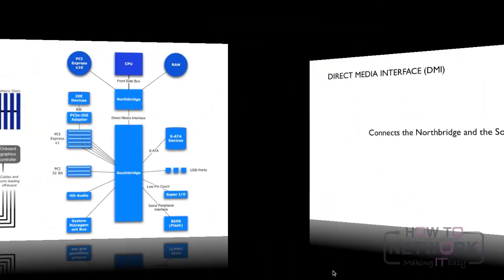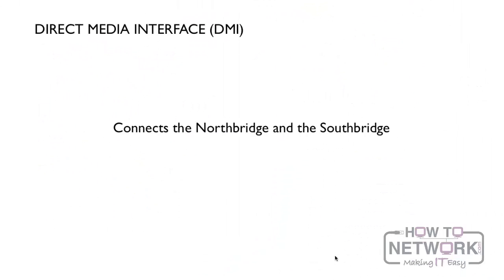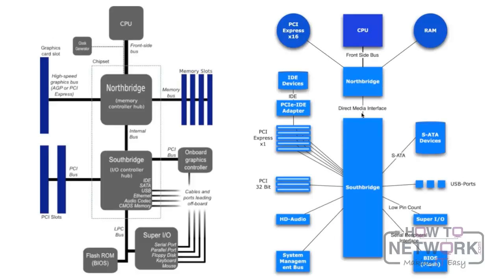The Direct Media Interface is what connects the North Bridge and the South Bridge. You can see it here — the Direct Media Interface, also called the internal bus. This is what connects the North Bridge to the South Bridge. If you see the term 'Direct Media Interface' on the test, you know that's the thing that connects the North Bridge and the South Bridge together.